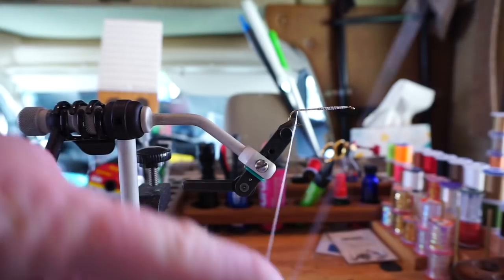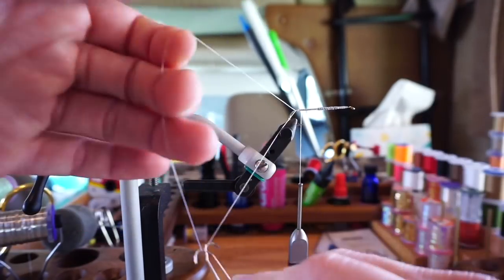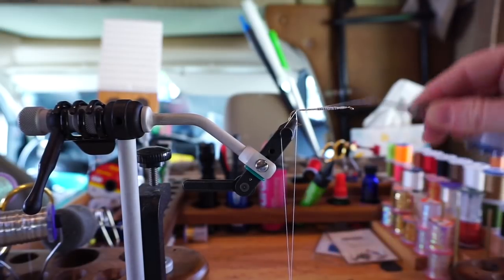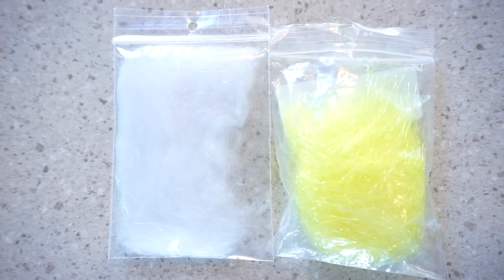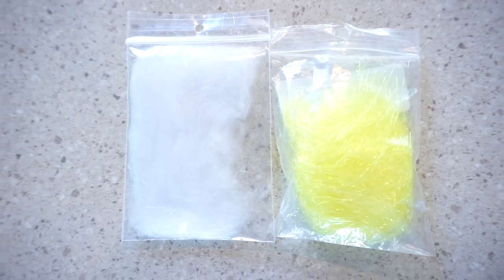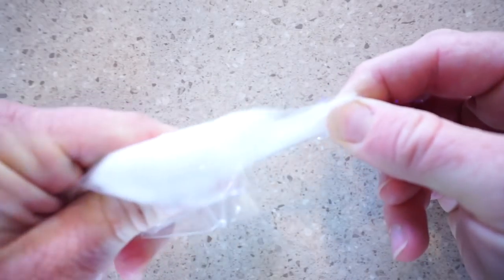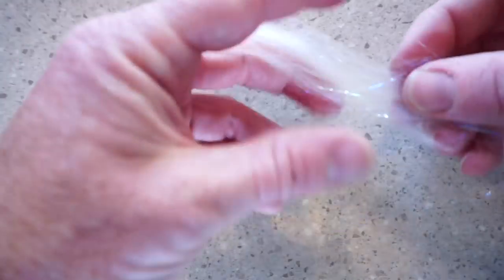Now make a fairly long dubbing loop with your thread and attach the dubbing twister. I find it also helps to bring your thread up to the eye of the hook and get it out of the way. For dubbing, I like this streamer dubbing fiber by Risen, and a bright colored flashy dubbing like this ice dub will work for the hotspot.